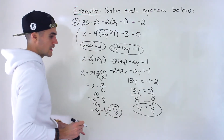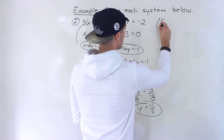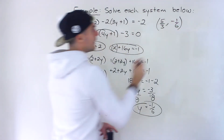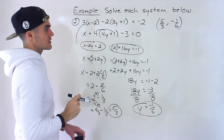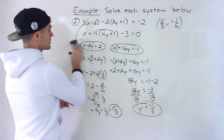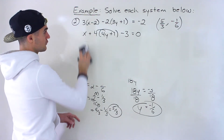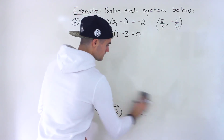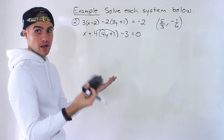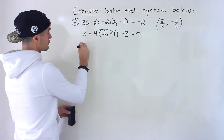So the solution is a bit more complex — fractions. We got x equals 5/3 and y equals negative 1/6. That's the answer. Checking these is going to take a lot more work because we're working with fractions, but your teacher may require you to do this, so let's go through them one by one.